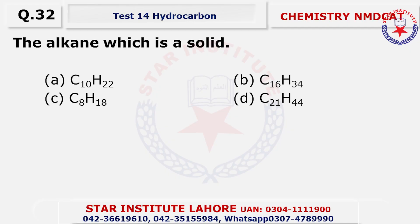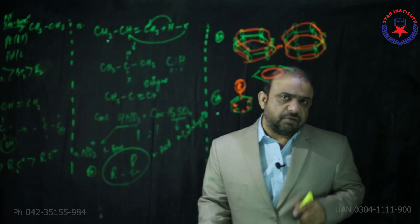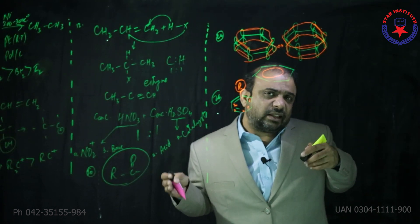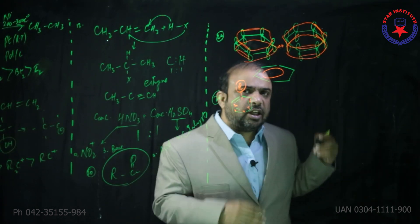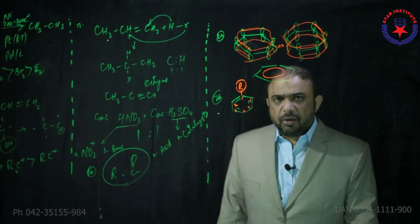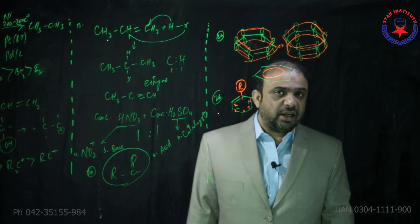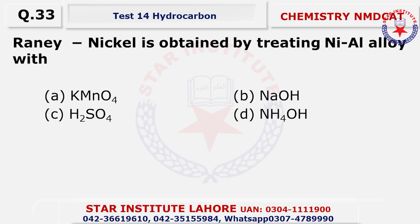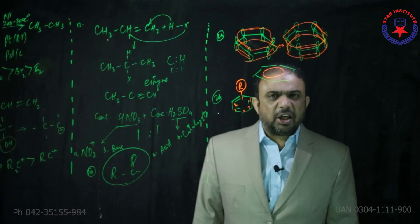Question 32: which of the following is a solid? The answer is delta — because as carbon number increases, compounds go from gas to liquid to solid state. The higher the carbon number, the more likelihood there is to be in a solid state.